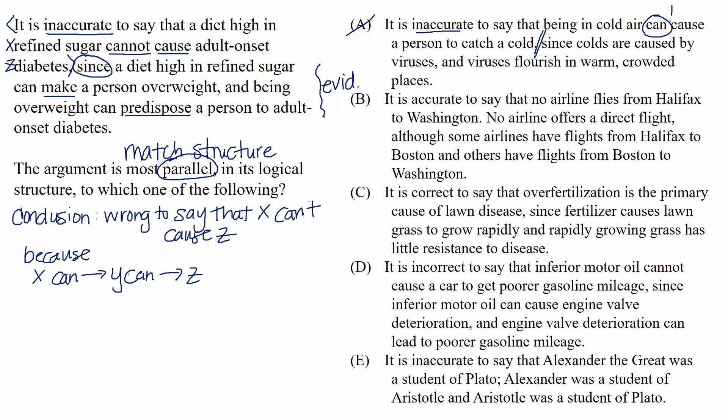For the record, though, the evidence doesn't match either. The choice ends with, since colds are caused by viruses and viruses flourish in warm, crowded places. There are way more than three terms in this choice. The evidence adds viruses and warm and crowded places. So it's just not a match. But we could have stopped at the conclusion on test day.